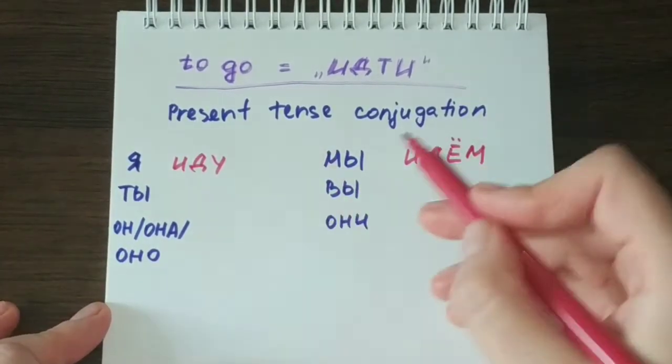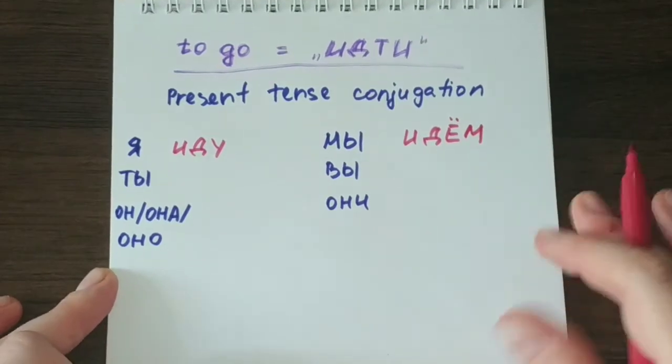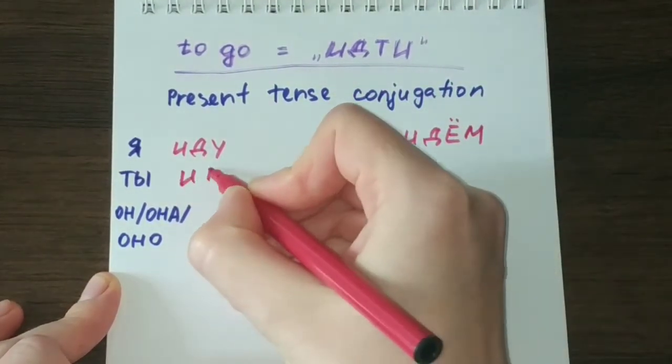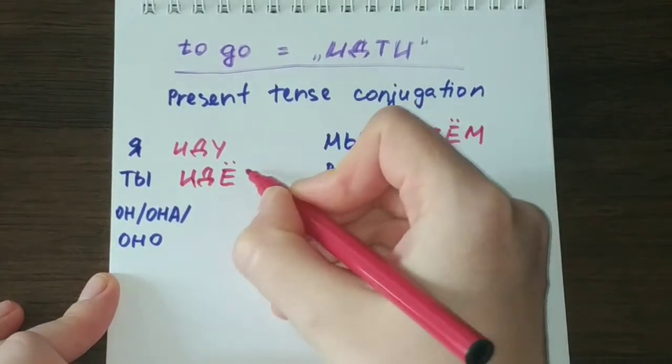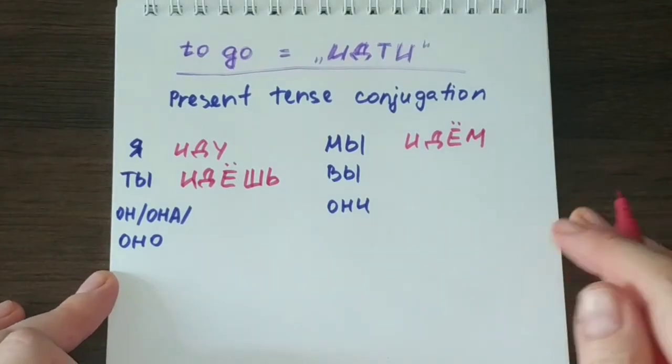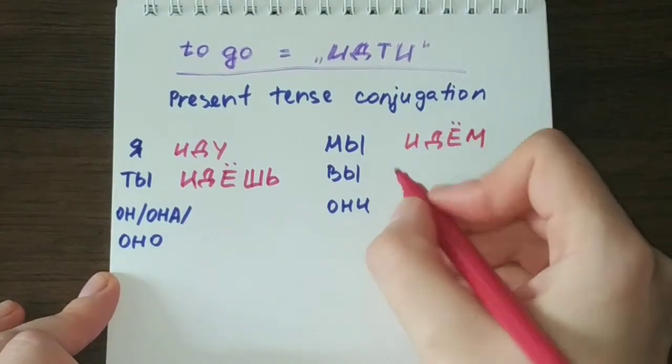The second person singular will be ты идёшь. And the plural version will be вы идёте.